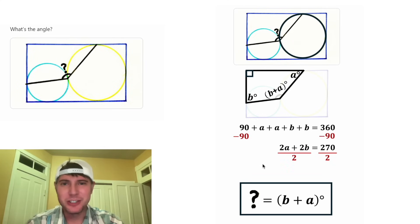Then we can divide both sides by 2. On the left-hand side, this is A plus B. And on the right-hand side, 270 divided by 2 is 135.